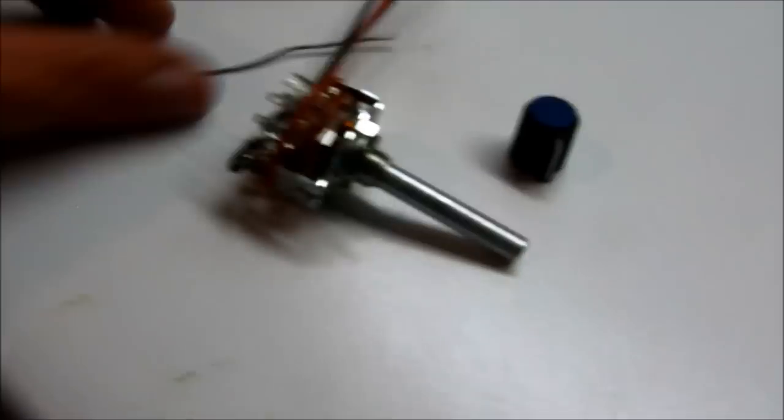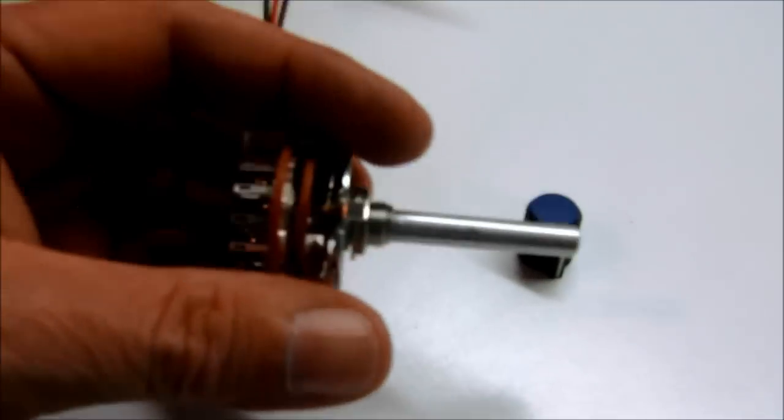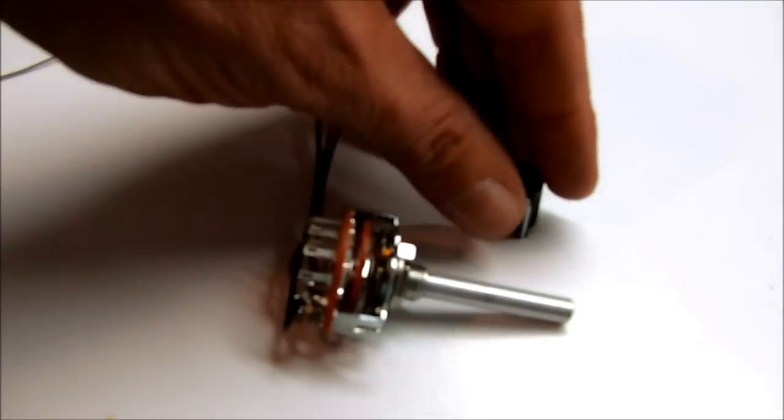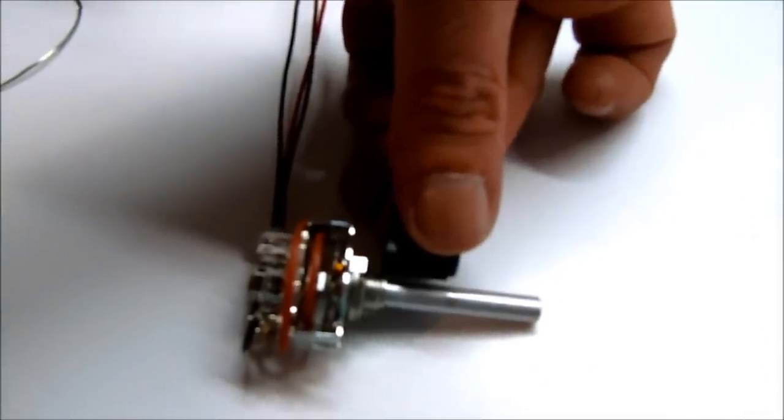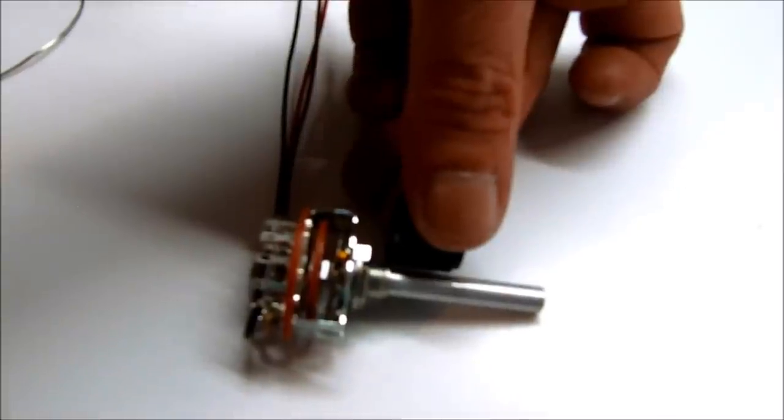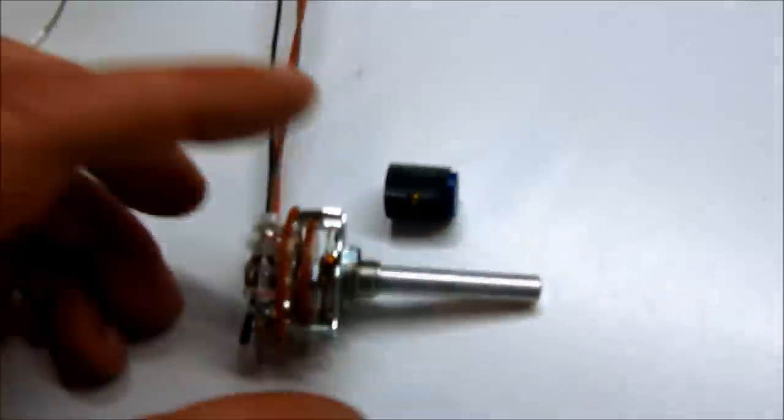Okay, so there's one more thing we need to do to this switch before we get ready to mount it. With this particular switch, the shaft is way too long and the switch is going to stick way out of the box. So basically with the knob that I purchased here, I'm going to need to cut it off about the length of the knob just so that I can get rid of all of this excess shaft on the switch.